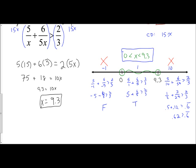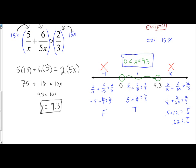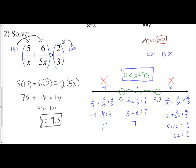This is how you solve rational inequalities. Find your excluded value, find your common denominator, multiply through by it, and treat it like an equation to get a candidate solution. Then use that value and your excluded value to mark intervals on the number line, pick test points, and see where true statements are created. Where it's true is where your solution exists. Thank you.